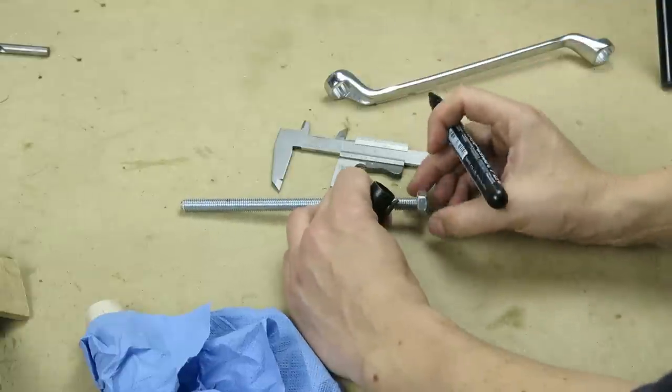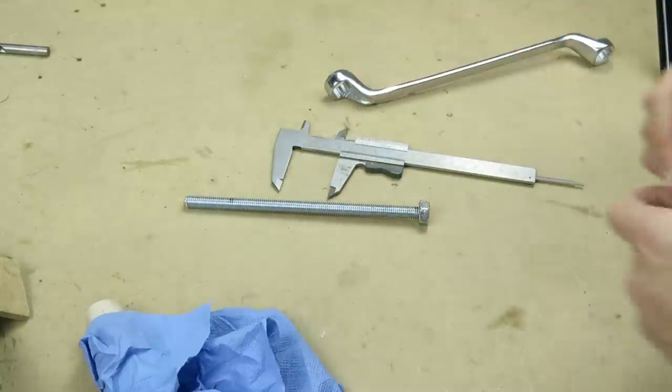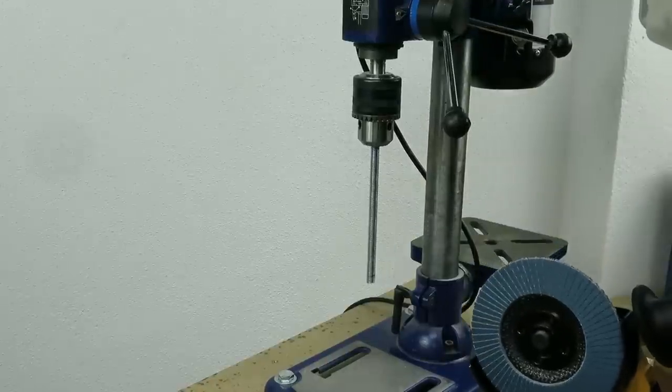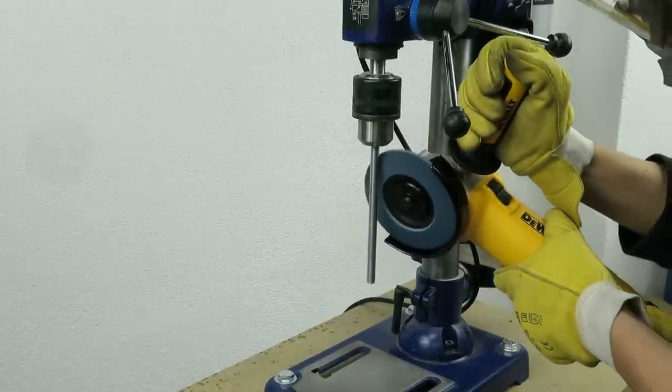Now it's time to make the steel rod and for that I use 10mm threaded rod and I mark the place where it needs to have thread so that I can remove the thread in the rest to make it look better.